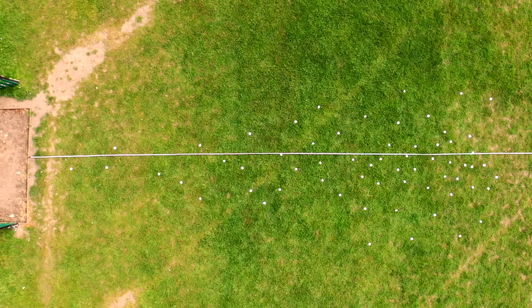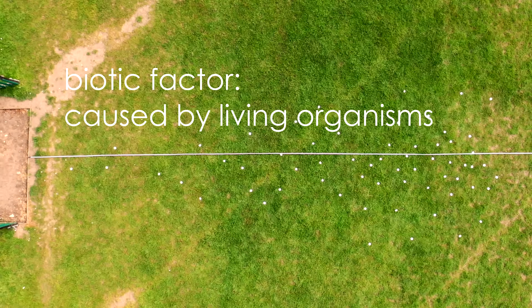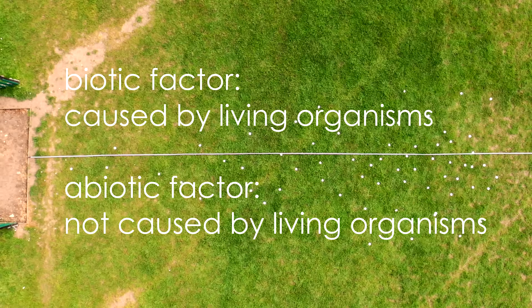This is what we call a biotic factor as it is due to living organisms. Abiotic factors are those that are not due to living things — for example, light intensity or pH of the soil.